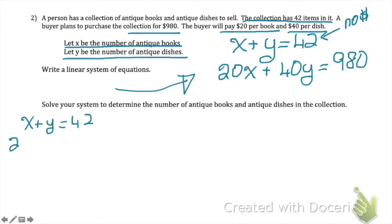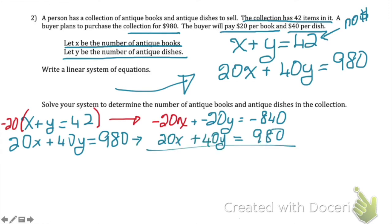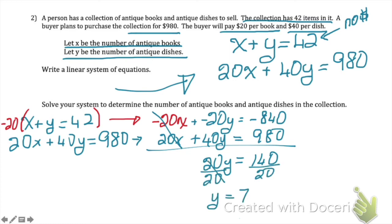Now I'm going to use elimination to solve this. I could eliminate either x or y — I'll eliminate x since that's my smaller number. So I must multiply everything in the first equation by negative 20 to get x terms that will cancel each other out. When I do that, I get negative 20x plus negative 20y equals negative 840. I write my other equation right under that and add them together. My x terms are eliminated. When I add the y terms I get 20y, and when I add the constants I get 140. So 20y equals 140, and I get that y equals 7.